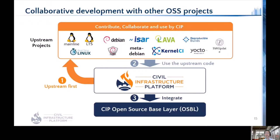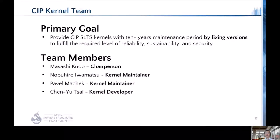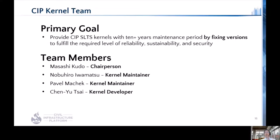For the CIP kernel team, upstream means Linux mainline and stable releases. The primary goal of the CIP kernel team is to provide CIP SLTS kernels for 10-plus years by fixing versions to fulfill the required level of reliability, sustainability, and security. Kudo is acting as chair of the kernel team. Yamato-san and Pavel-san are working as CIP kernel maintainers, and ChenYu-san is acting as CIP kernel developer.